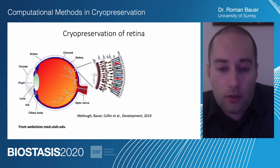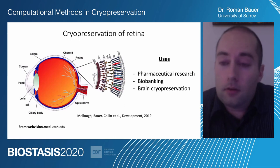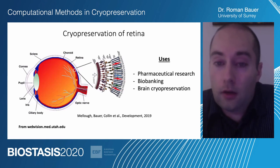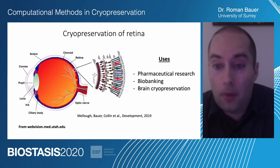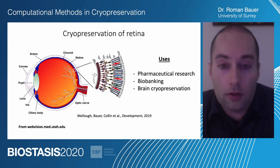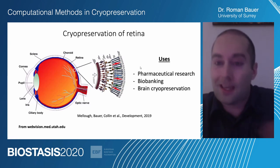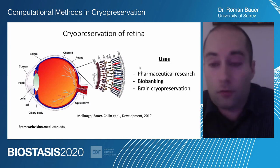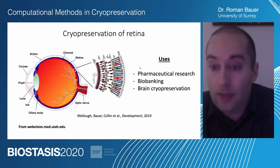We have recently published some work where we study the retina and how it changes during development in the human species. There are many uses of this. If one could cryopreserve the retina, pharmaceutical research would benefit because one could bank a large number of tissues and do drug testing with those. Currently one is quite restrained by the need to do experiments very quickly, but if one could cryopreserve them one could scale up pharmaceutical research with neural tissues. Also for biobanking this would be good — one could transplant certain parts of tissues. And ultimately, of course, brain cryopreservation would benefit from insights gained by cryopreserving the retina.